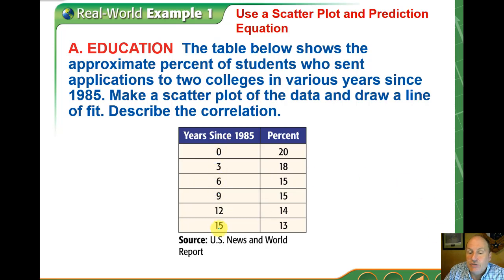Most of the time data doesn't present itself this way. This has already been adjusted for us. Years since 1985, 0, 3, 6, 9. So year 0 would be 1985. Three years later would be 1988.